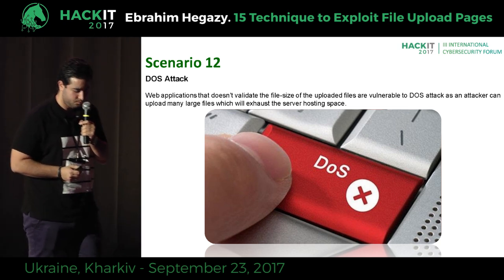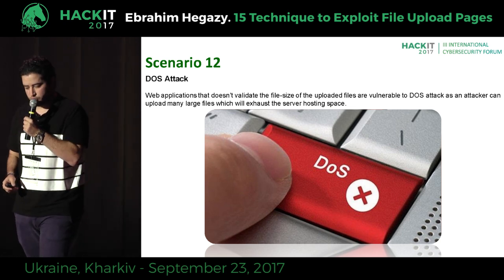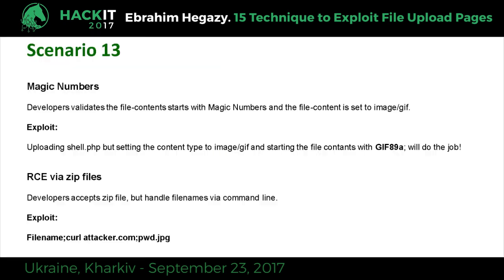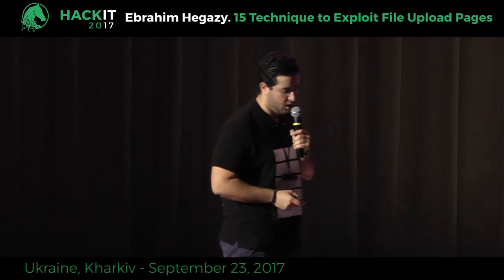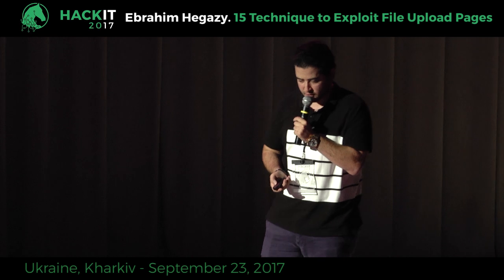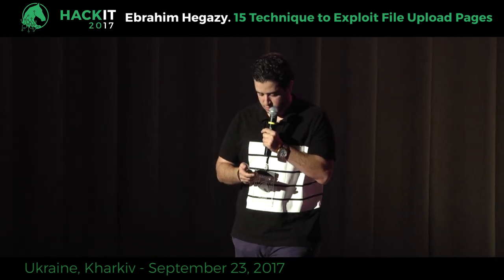Scenario thirteen: magic number bypass. WordPress at some version validated file content and magic numbers. GIF images start with 'GIF89' or 'GIF87' followed by a semicolon. If you create a PHP file that starts with the GIF magic number and then contains normal PHP content, WordPress was only validating the magic number — which could be bypassed by injecting that magic number into your PHP code. Also, RCE via zip files: when Facebook tried to unzip a file, it executed it as a normal operating system command.